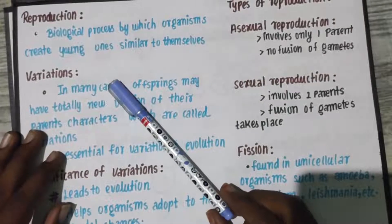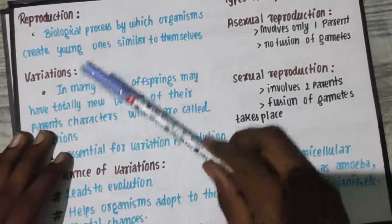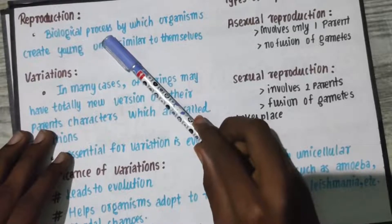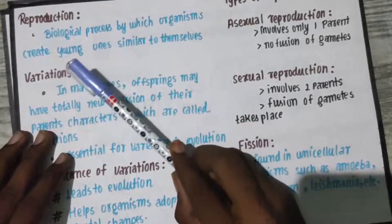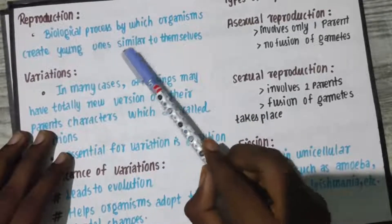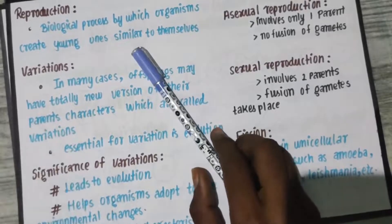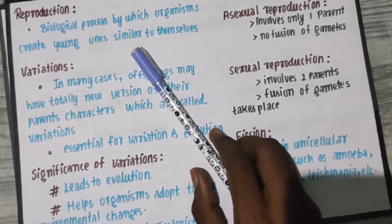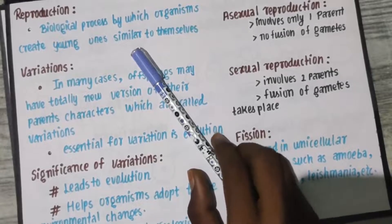So, the definition of Reproduction: Reproduction is nothing but a biological process by which organisms create young ones similar to themselves. In this biological process, every organism can be created, and young ones are created through the process of reproduction.